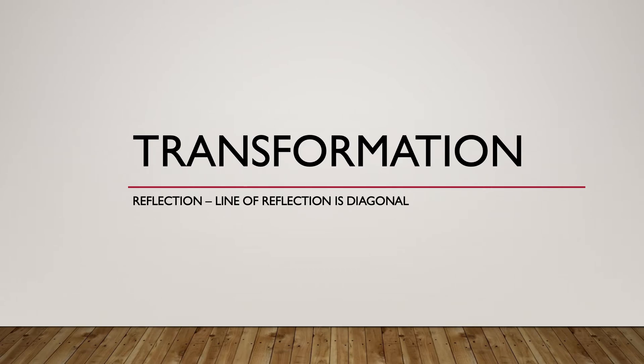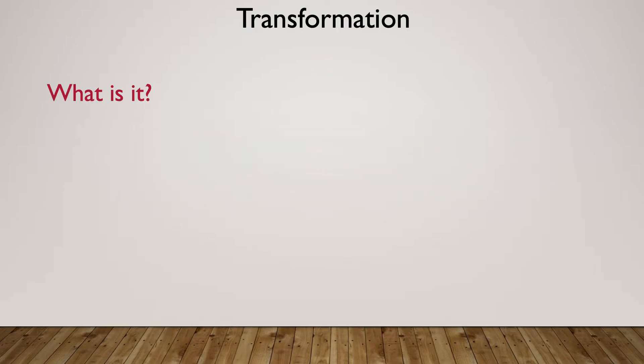Today we're looking at transformation — specifically reflection — and when the line of reflection is diagonal. What is it? It's a process that manipulates a polygon on a plane or coordinate system.